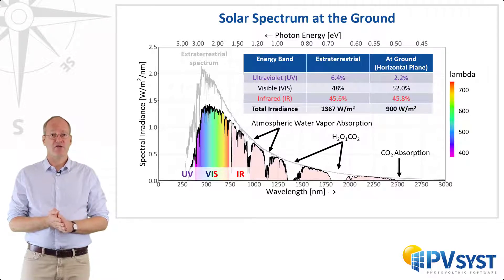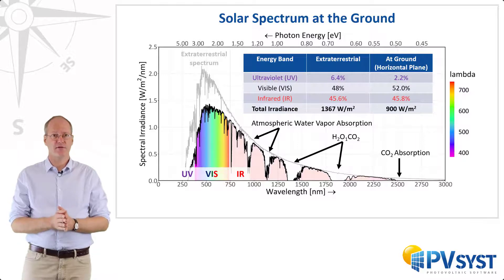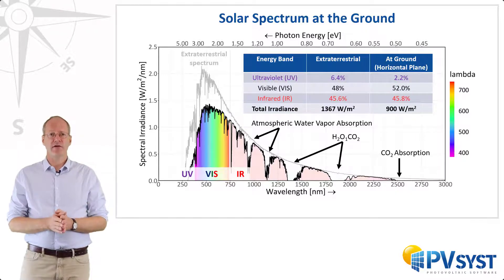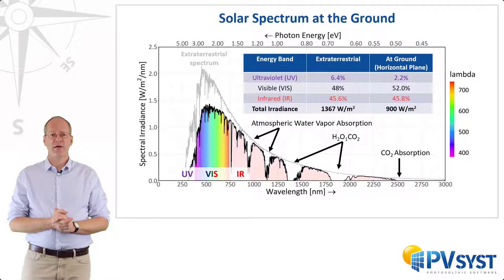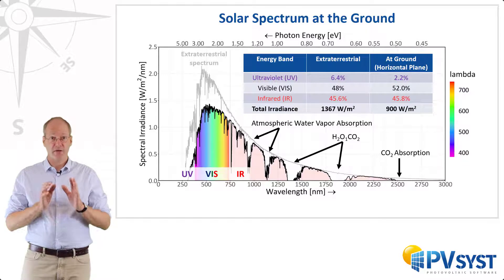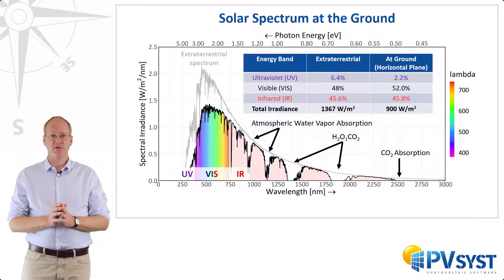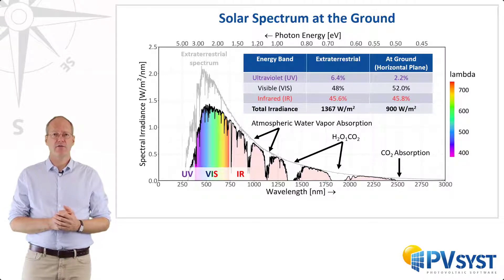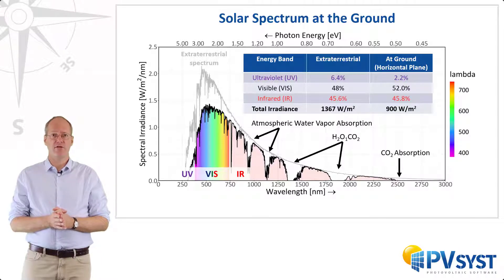At ground level, these shares change slightly. We now have 52% of the irradiance in the visible range, about the same share of infrared as before, but only 2.2% of the spectrum comes from ultraviolet irradiance. This example shows the spectrum of specific atmospheric conditions, a particular sun position and a specific altitude of sea level — the solar spectrum will vary depending on these conditions.